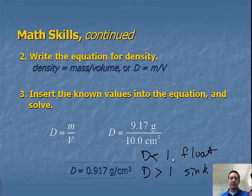So this is only true, it can only be 1 if it is water. But any time the density of an object is less than the density of the object it's in, it will float. Any time the density of the object that's in the solution or in the liquid is greater than the density of the liquid that it's in, it will sink.